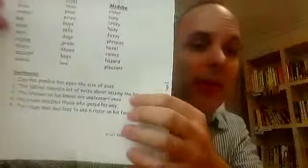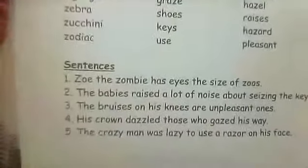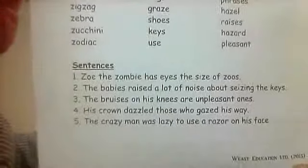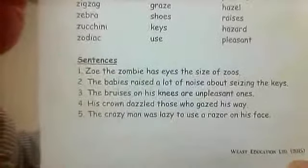And down here, there are some sentences. So let's go over these quick. Zoe the zombie has eyes the size of zoos. It's a funny sentence. So just try to practice the Z sound, the Z sound.